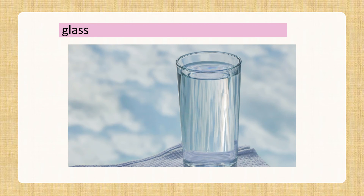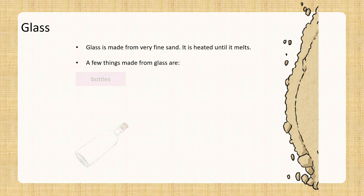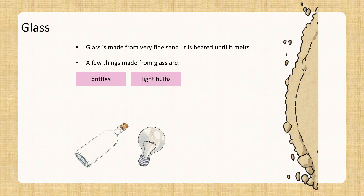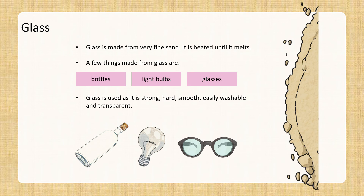Glass — this is another very common material. Glass is made from very fine sand. It is heated until it melts. A few things made from glass are bottles, light bulbs, and glasses that help us to see clearly. Glass is used as it is strong, hard, smooth, easily washable, and transparent.